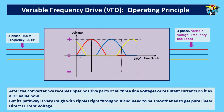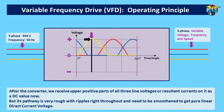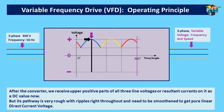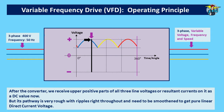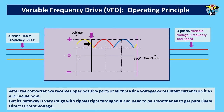After the converter, we receive the upper positive parts of all three line voltages, or the resultant currents on them, as a DC value. But its pathway is very rough with ripples throughout, and needs to be smoothened to get a pure and linear direct current voltage.